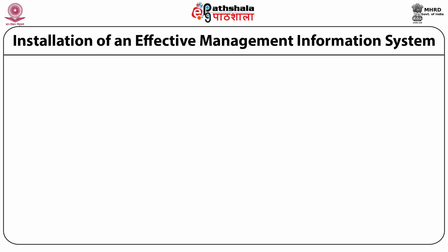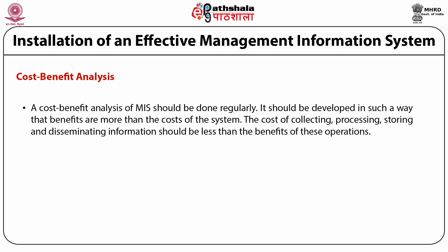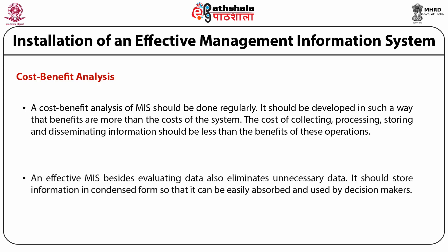The next step is cost-benefit analysis. Cost-benefit analysis of MIS should be done regularly — it should be developed so that the benefits of the system are more than the cost. The cost of collecting, processing, storing, and disseminating information should be less than the benefits. An effective MIS also eliminates unnecessary data and stores information in condensed form so that it can be easily absorbed and used by decision makers.